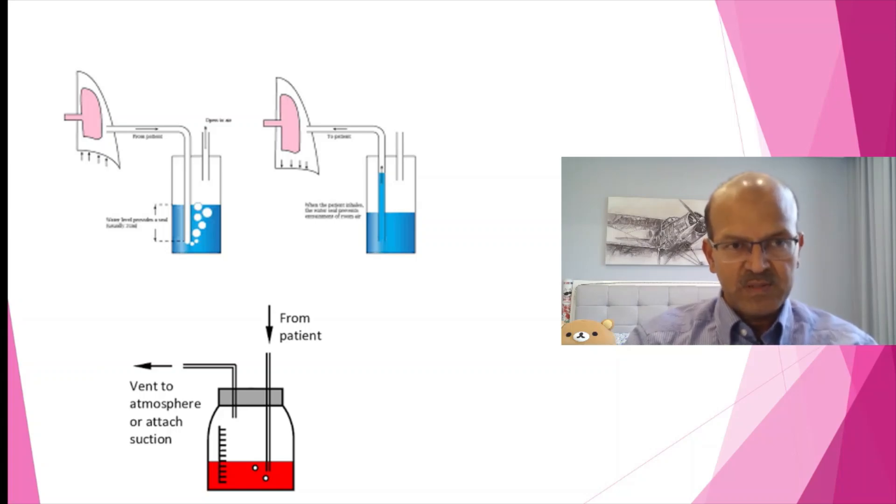Once the suction is stopped successfully, you look at clamping the chest drain. If you have a 3-way tap connected, you can just close the 3-way tap. Or if you don't have a 3-way tap, you clamp the tube with an artery forceps. Once the clamping is done, you wait for at least 2 to 4 hours. Some units wait longer. And you repeat an x-ray before you actually remove the chest drain.